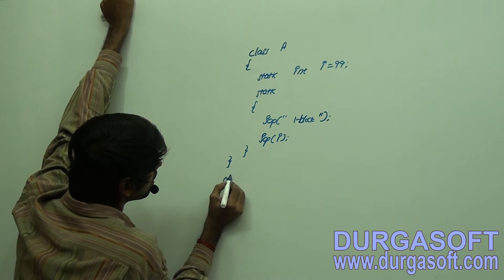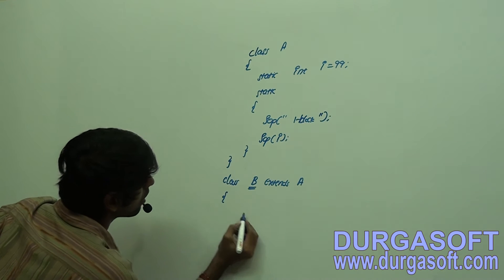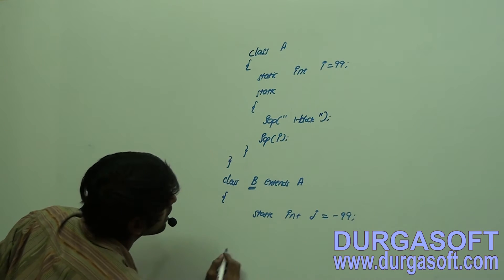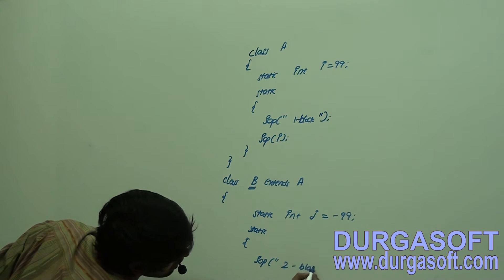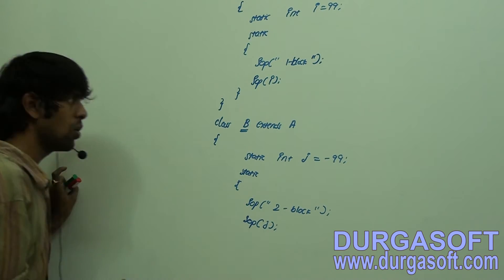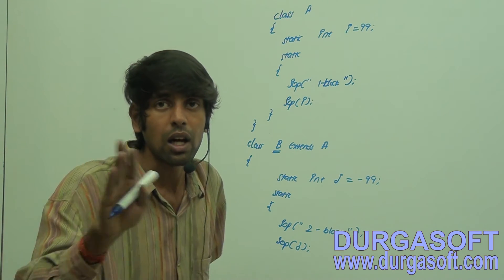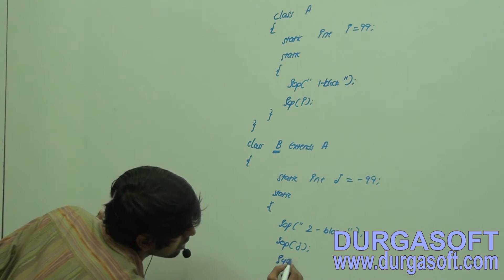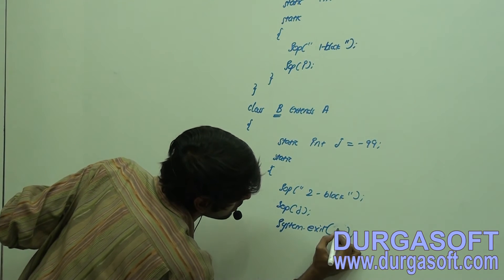Now let me take a child class for A — class B. Here I'll declare: static int j equals to minus double-line. Let me take one more static block. Inside, System.out.println of 'second block', and System.out.println of j. Now if I load this child dot class file and there is no main method, there will be abnormal termination, so I'll put JVM in shutdown mode using System.exit(0).